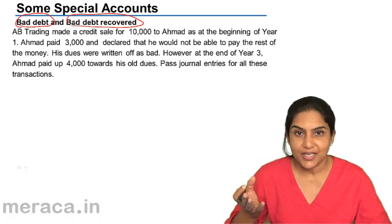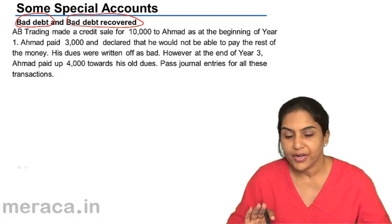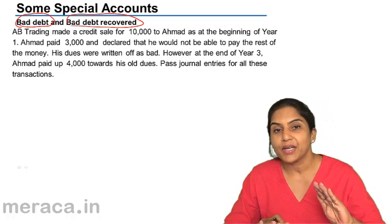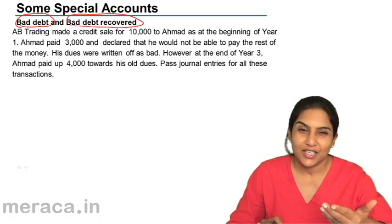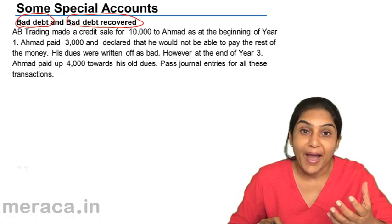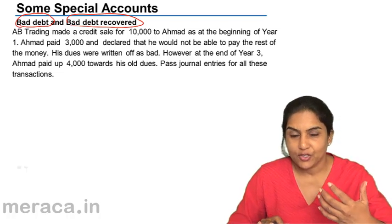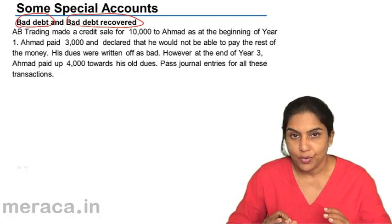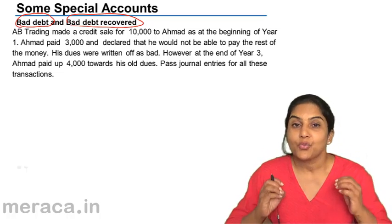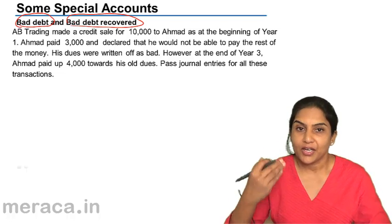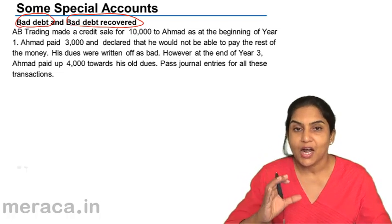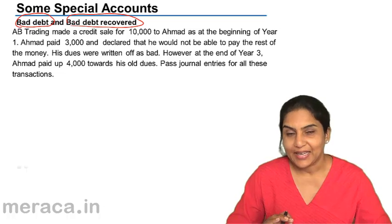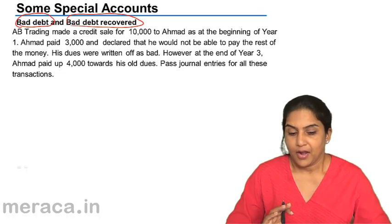10,000 was an asset, but now we say 10,000 is no longer an asset. We should remove this receivable — decrease this asset. And how do we decrease? We say it is a loss. The loss is called bad debt. When there is an amount to be received from somebody and he is not in a position to pay, and we feel that this money cannot be collected, we call it a loss. We write that account off and debit an account called bad debt — a loss of bad debt.